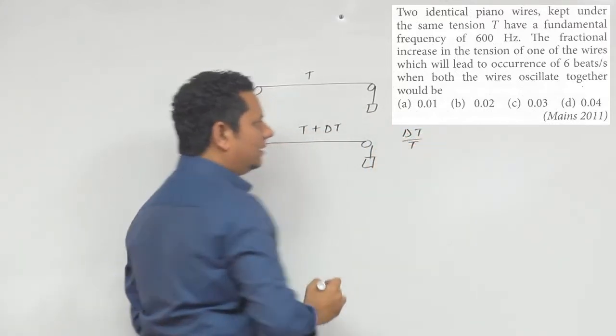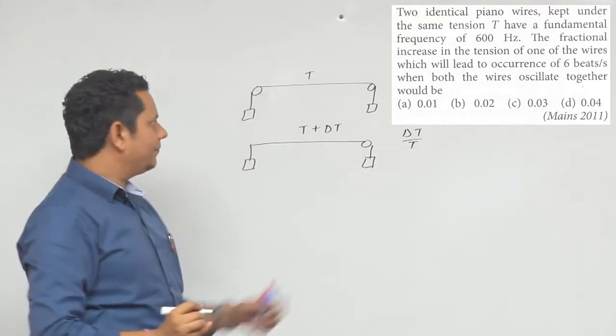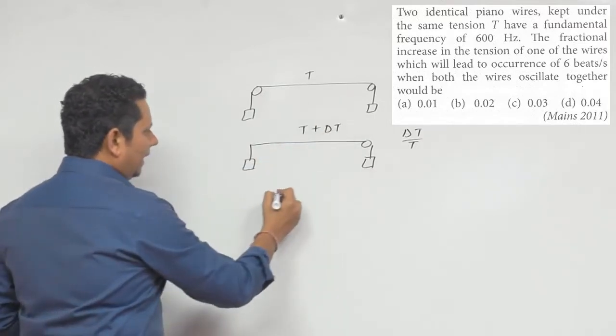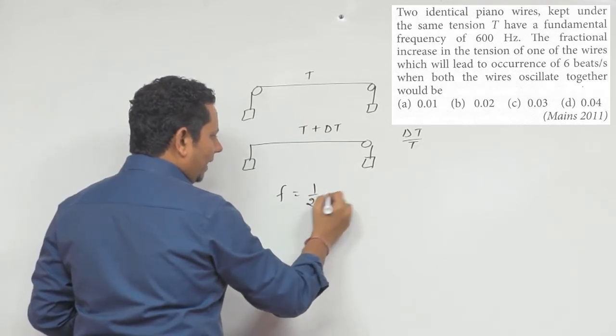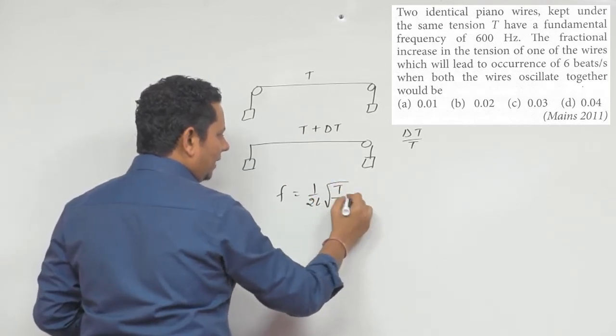So the frequency formula is: one by two L under root of T divided by mu.